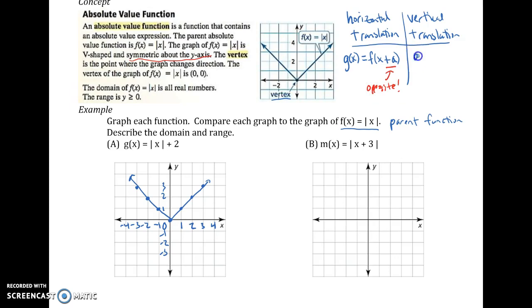Vertical translation, again, if we have some transformation g of x, and we're taking that parent function f of x, it's going to be when we add or subtract something to the entire function. So notice how that's not inside the parentheses with x. And then remember, this one's pretty straightforward. You're either going to go up if it's positive or go down if it's negative.